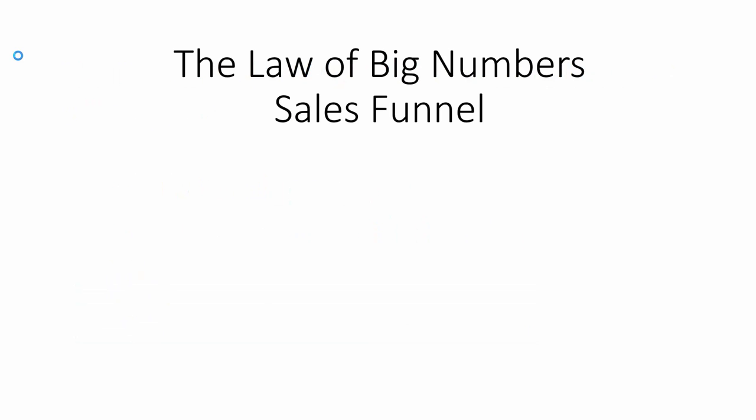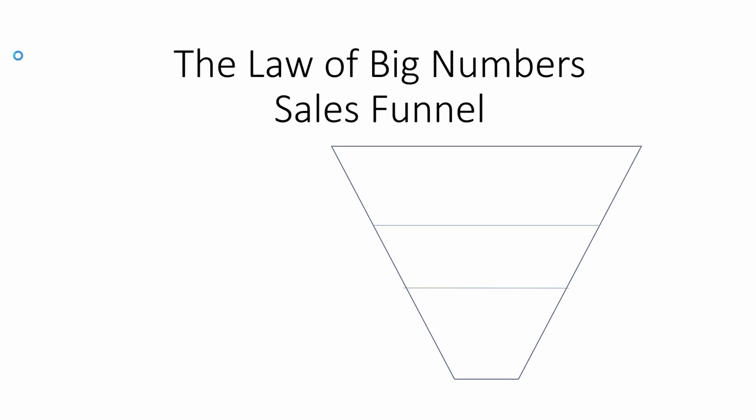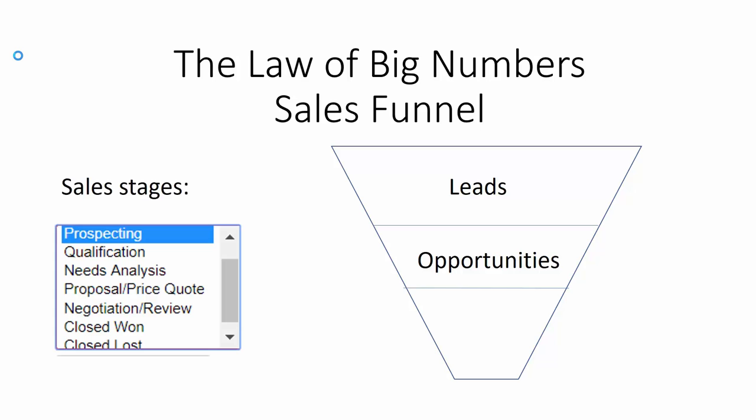Let's recap again. We are using the law of big numbers and for that we apply the sales funnel. The sales funnel has a funnel shape. The top layer comes with the leads. The leads are converted into opportunities. Then we need to work our opportunities through the different sales stages: from prospecting, qualification, needs analysis, then we send a price quote or proposal and negotiate and review until we know whether we have won the deal or lost it.